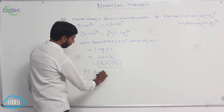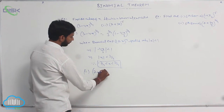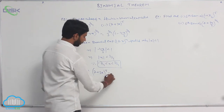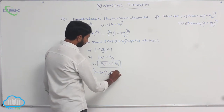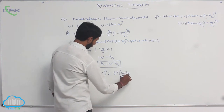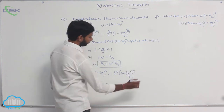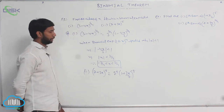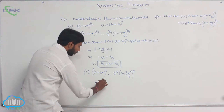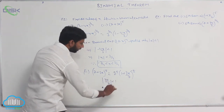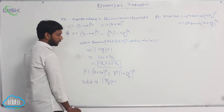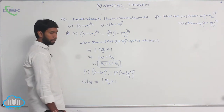The next expansion is (7 + 3x)^(−5). Any binomial expansion is of the form (1 ± x), so 7 is taken as common: 7^(−5) into (1 + 3x/7)^(−5). This expansion is valid when mod of (3x/7) is less than 1.